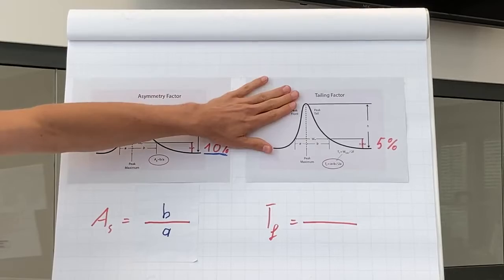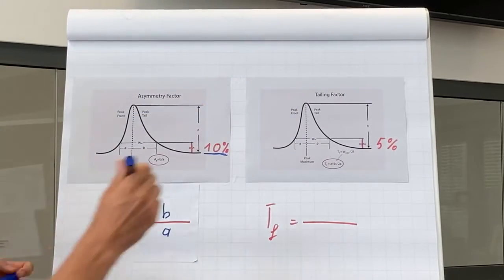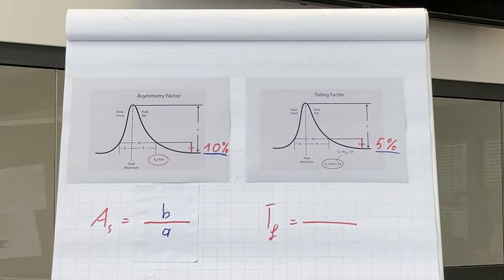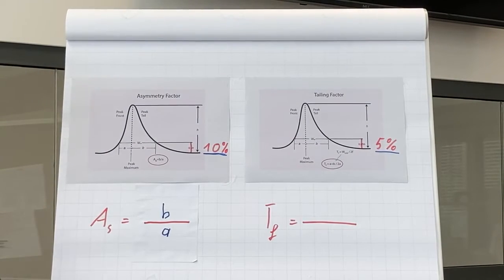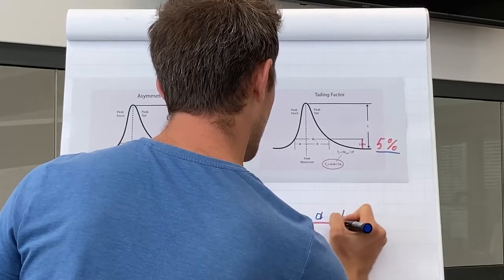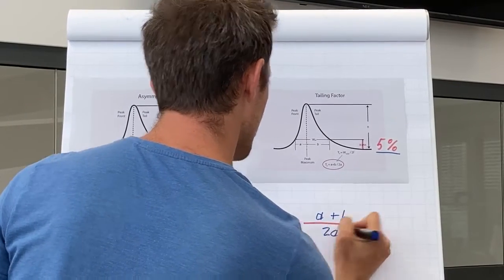The tailing factor is measured at 5% peak height and is calculated with the following equation: A plus B divided by 2 times A.